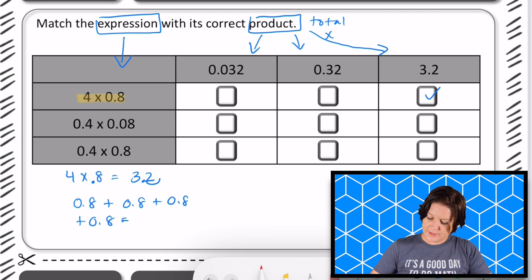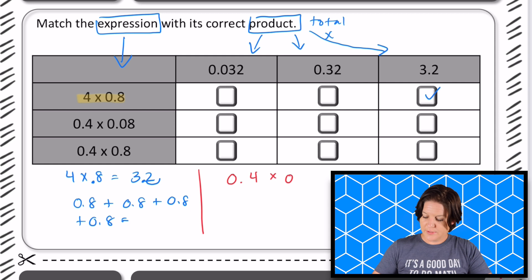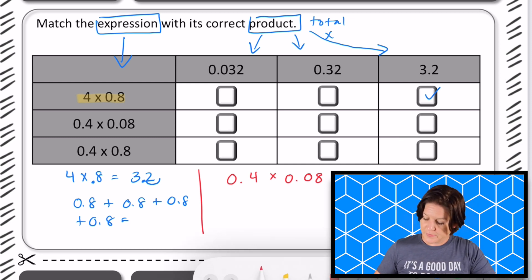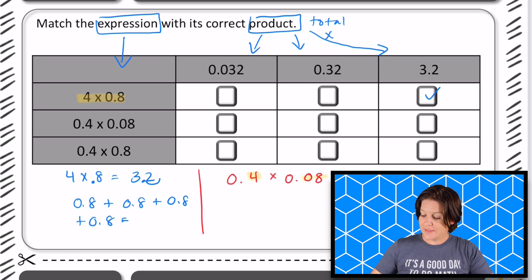Let's take a look at the next one. So here we have 0.4 × 0.08. Now I know this is going to be even smaller of a number, and I see that we have one, two, three digits behind the decimal. So that is what's going to happen in our product. That's important.